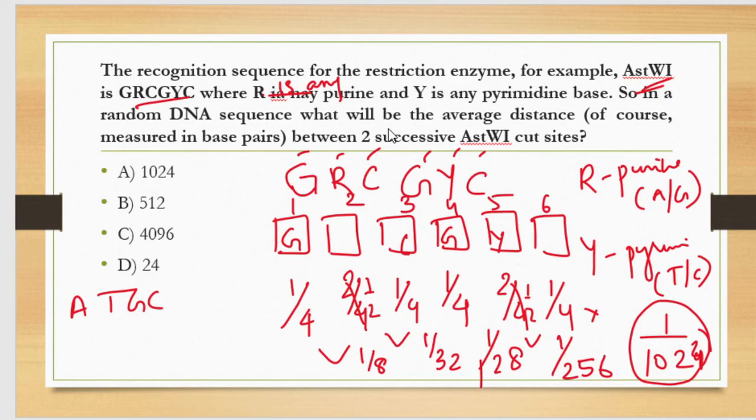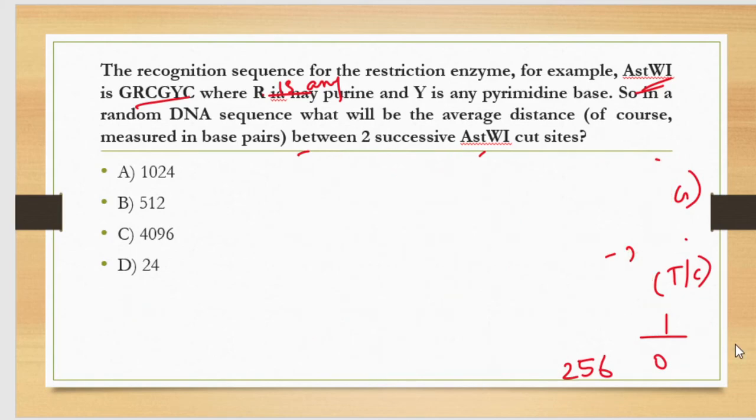One more thing you need to remember is that your DNA is double helix, right? So there are chances that in the second strand of the DNA, the probability of occurring the sequence will be different. We cannot assume that every time whatever is happening in the first strand is going to happen in the second.